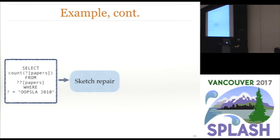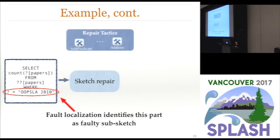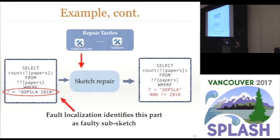When we perform repair, fault localization tells us that the likely culprit is the WHERE clause. The intuition is that there is actually no database entry containing 'OOPSLA 2010' as a single value. So we consult our repair tactics, which suggest adding a predicate. As a result of repair, we generate a new sketch where the WHERE clause is now a conjunction of two different predicates.